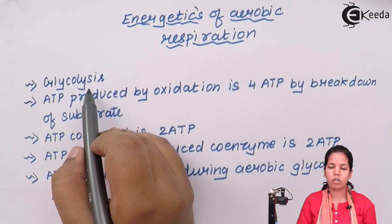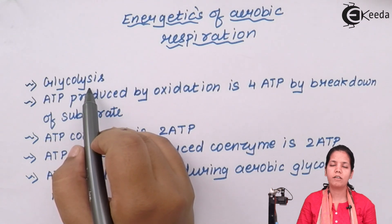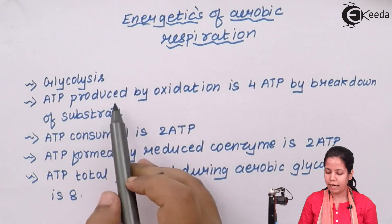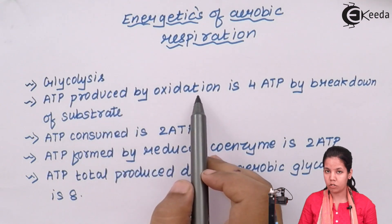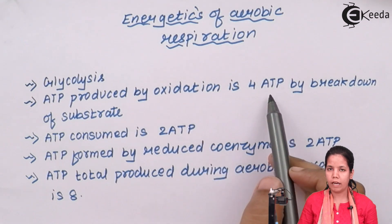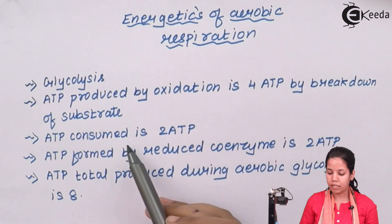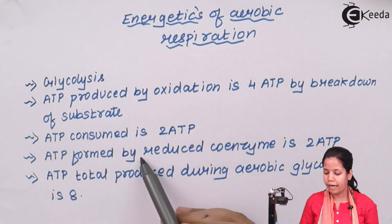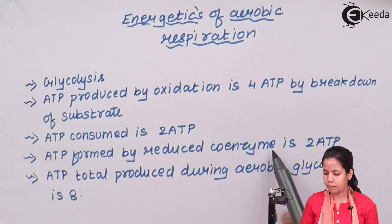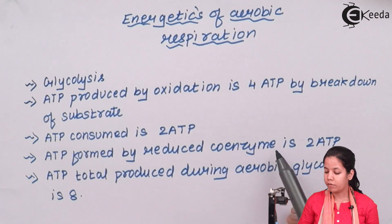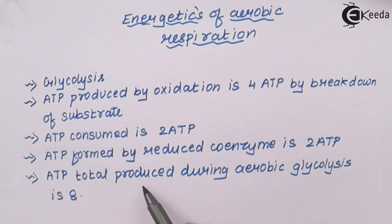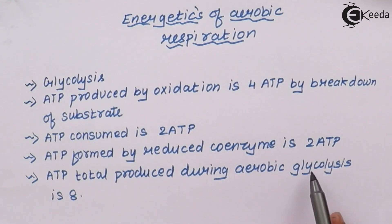The first cycle is glycolysis — the breakdown of glucose into two molecules of pyruvic acid. The ATP produced by oxidation at substrate level is 4 ATP. ATP consumed is 2 ATP. ATP formed by reduced coenzymes such as NADH is 2 ATP. The total ATP produced during aerobic glycolysis is 8 ATP.